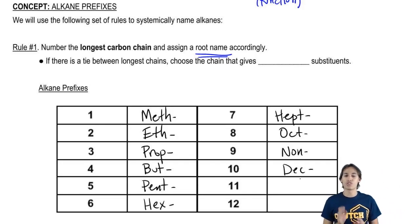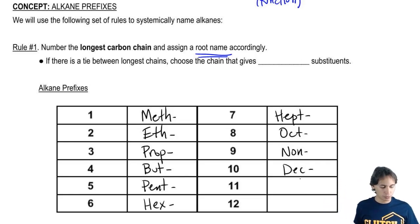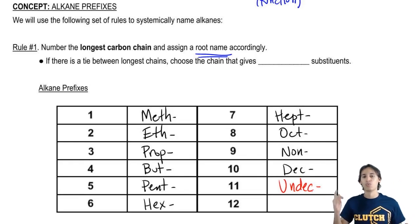Now, 11 and 12 are a little bit weird. 11 is going to be undec, so that one actually makes sense. It's like 1 and 10. And then 12 is dodec.